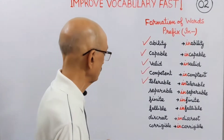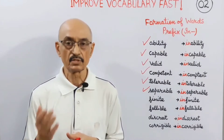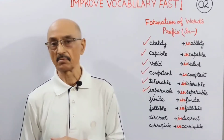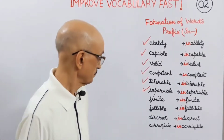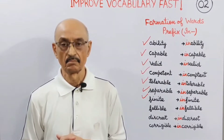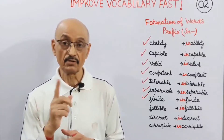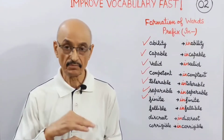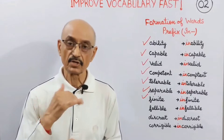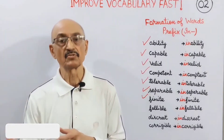The next word is 'separable', which can be separated — this is again an adjective. If we take prefix 'in' before it, it becomes 'inseparable'. The next word is 'finite'. If you take 'in' before it, it becomes 'infinite'. Try to understand the difference in their pronunciations. 'Infinite' means unlimited.